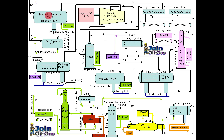Here you can see the production separator. All the gases and fluids from different wells come to this vessel, which could have a pressure of 355 psig. This is basically a three-phase separator. It will separate the process fluids into three streams: gas, water, and oil or hydrocarbons.